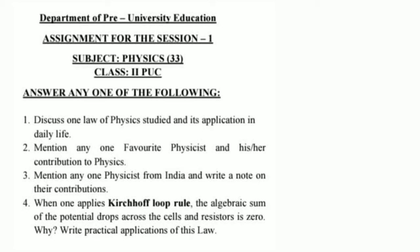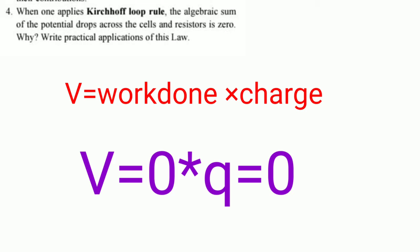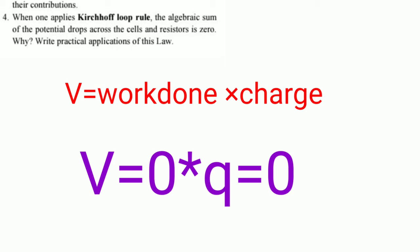Now let's take question number four: when one applies Kirchhoff's loop rule, the algebraic sum of the potential drop across the cell and resistor is zero. Why is it zero? In a loop, we start from one point, measure the potential across all the devices, and come back to the same point. The charge moves in a closed path so displacement is zero. Work is zero, and since potential is work divided by charge, potential also becomes zero. That is Kirchhoff's voltage law.